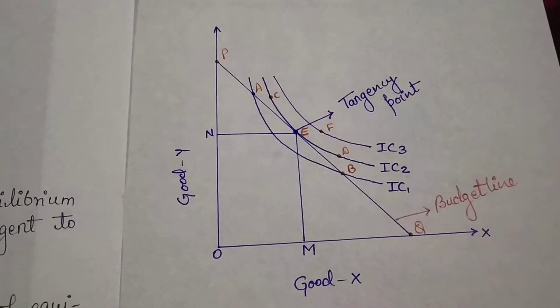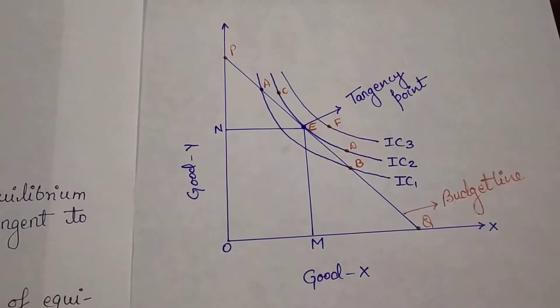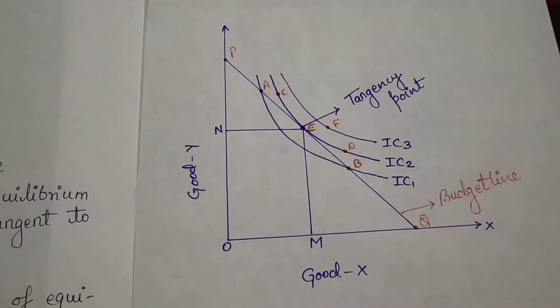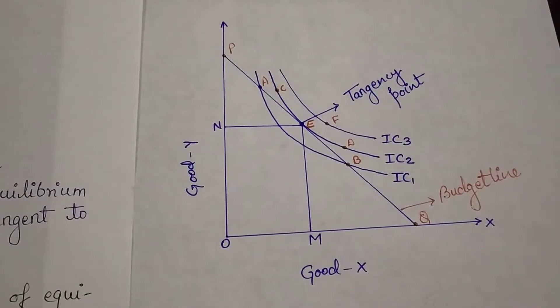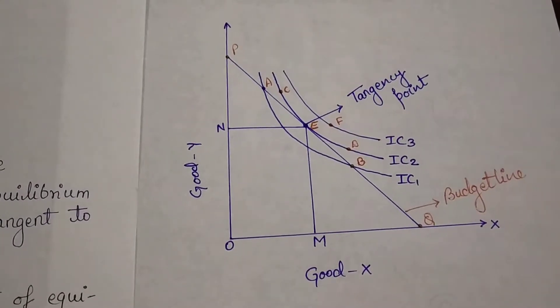So now look here, I have drawn the diagram to make you clearly understand the concept. On the X axis it is good X, on the Y axis it is good Y.